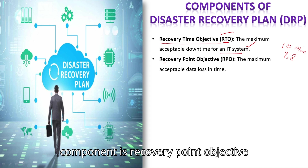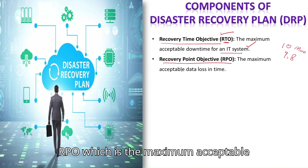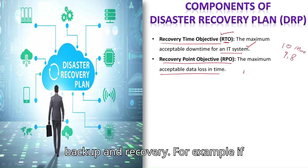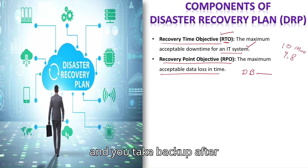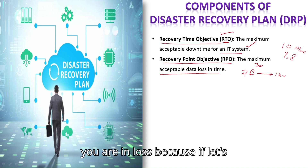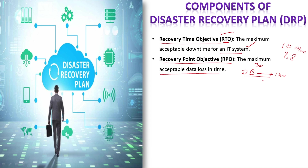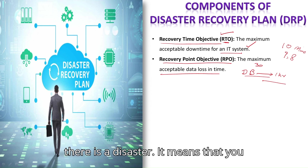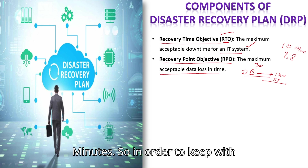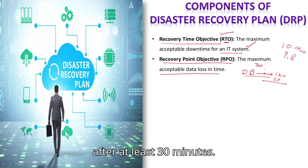Another important component is Recovery Point Objective (RPO), which is the maximum acceptable data loss in time. This deals with database backup and recovery. For example, if you have a critical database and you take a backup every hour, but your RPO is 30 minutes, then you are at risk — if a disaster occurs 59 minutes after the last backup, you have lost 59 minutes of data. In order to comply with the RPO, you must take backups at least every 30 minutes.